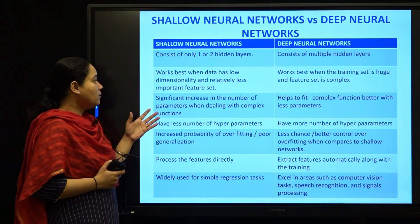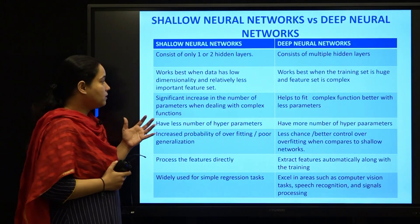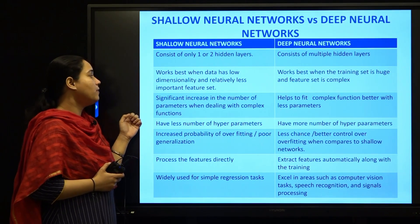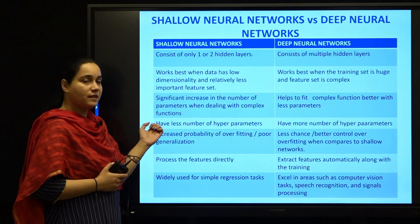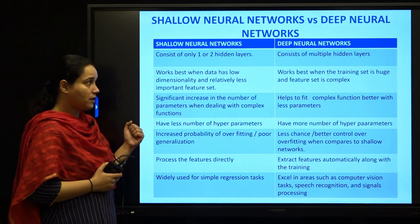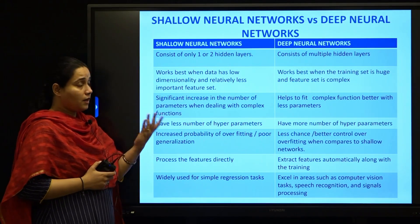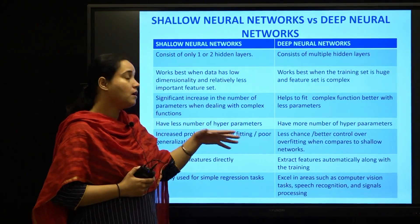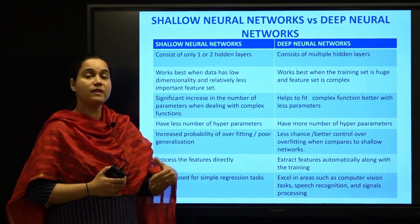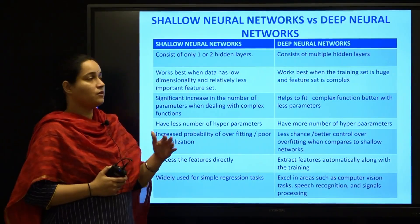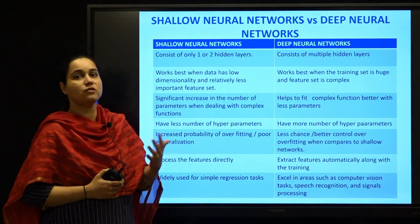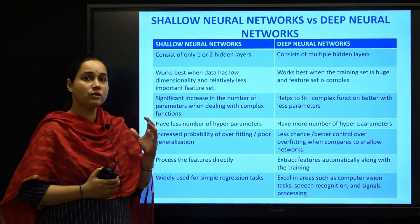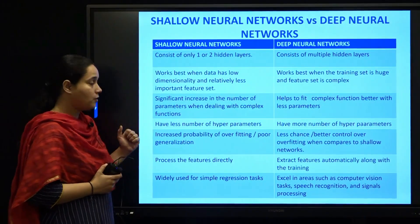The third difference is that there will be a significant increase in the number of parameters when dealing with complex functions in a shallow neural network. But deep neural network is going to fit the same complex function in a better way and with a lesser number of parameters. So when you have a complex function and a higher amount of data, the clear win-win is to use a deep neural network.